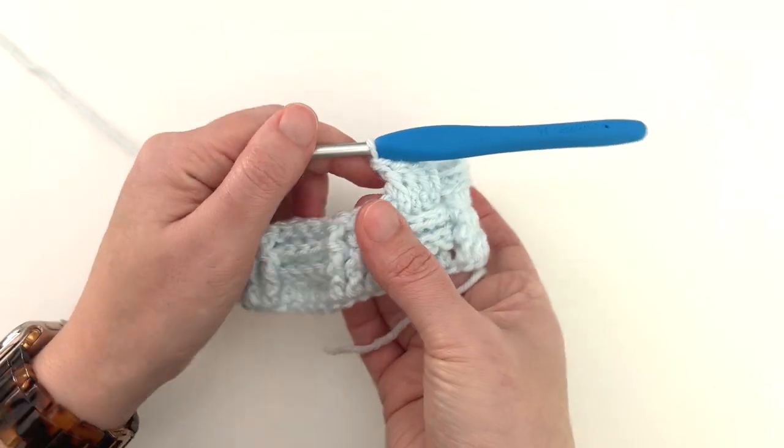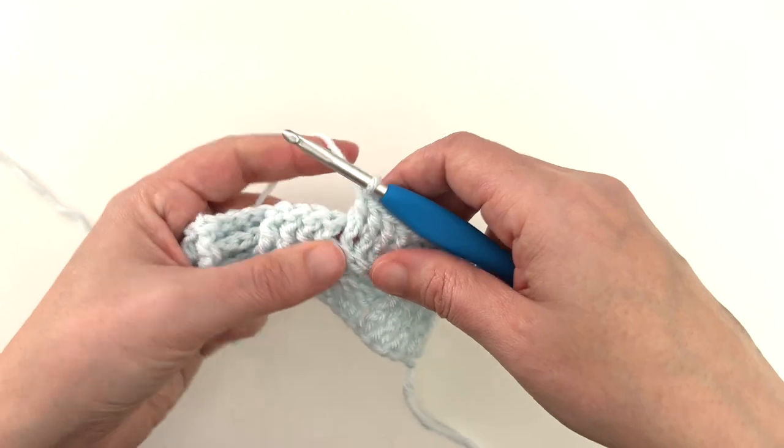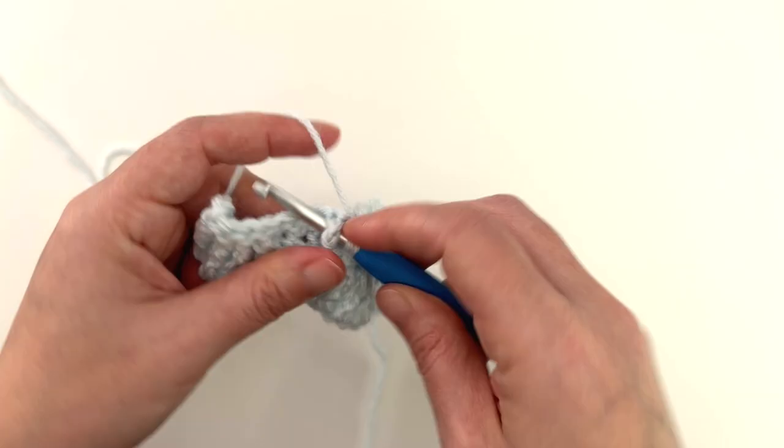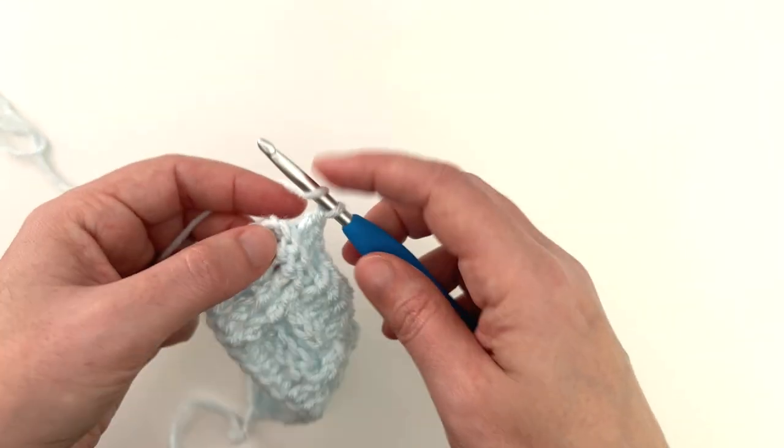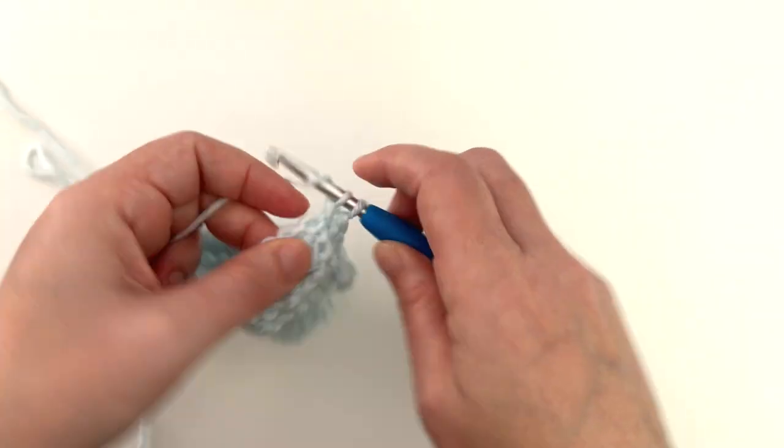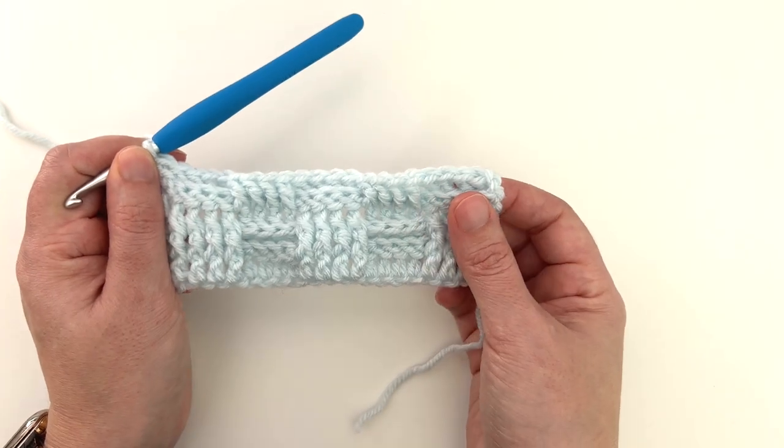So you're going to continue on four back, four front, four back, or however many you are working. And again, double crochet into the top of your turning chain. And that is row four.